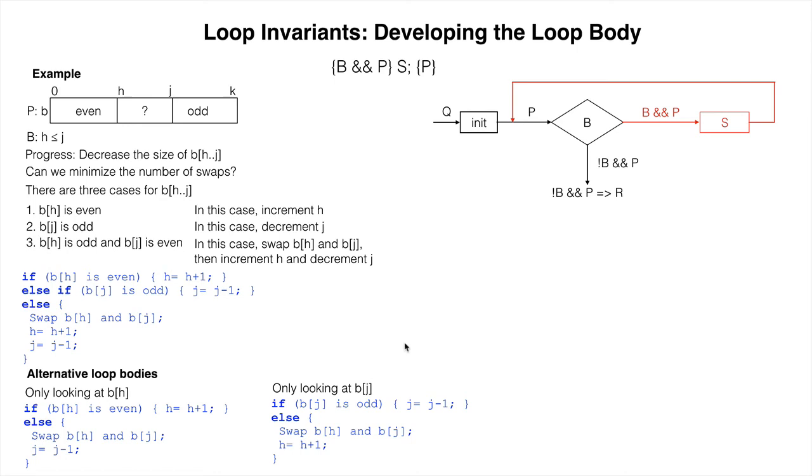These two solutions use only one test per iteration, but each swap may put only one value in its final place. The repetend we just developed may make up to two tests per iteration, but each swap puts two values in their final place.